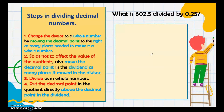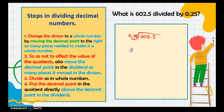Next: what if both numbers are decimals? Here are the steps for dividing decimal numbers. Example: 602.5 divided by 0.25. The first step is to change the divisor to a whole number by moving the decimal point to the right as many places as needed. In 0.25, we move two places to the right, giving us 25. Since we moved two places in the divisor, we also move two places in the dividend from the decimal point. The empty place value gets a zero added, making our new dividend 60250.